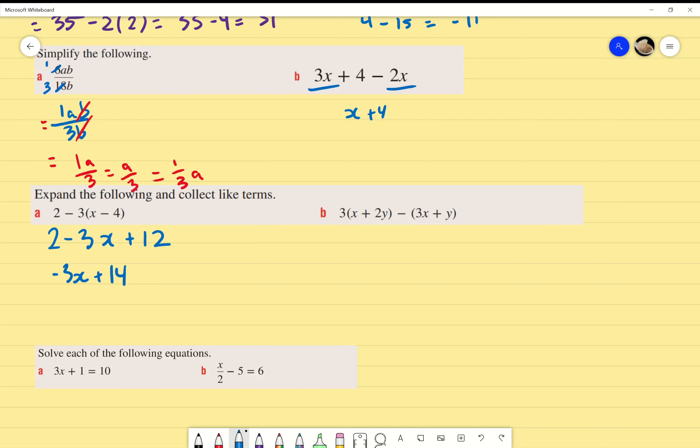This one over here, same idea. I'm going to multiply it out. So 3 times x plus 3 times 2y, which is 6y, minus 3x minus y. Right now there's no number there, but it's negative 1. So negative 1 times 3x, negative 1 times positive y. Am I done? No. Why not? Collecting like terms. I know 3x and negative 3x cancel out, and I end up with 6y minus y, which gives me 5y.